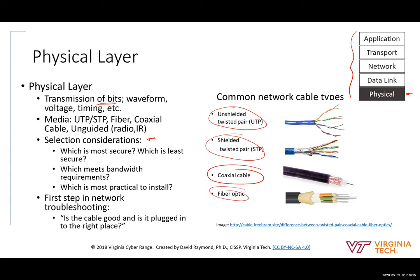Fiber optics is usually the highest bandwidth and most secure option because it's light traveling down a wire rather than an electrical signal that can be easily eavesdropped upon. But it's also very impractical to install — fiber optic cables are difficult to work with. With a wired connection you can cut the wire and twist ends together, but fiber optics doesn't work that way. The first step in network troubleshooting is to make sure the cable is plugged into the back of the computer if you're using cable network connections.